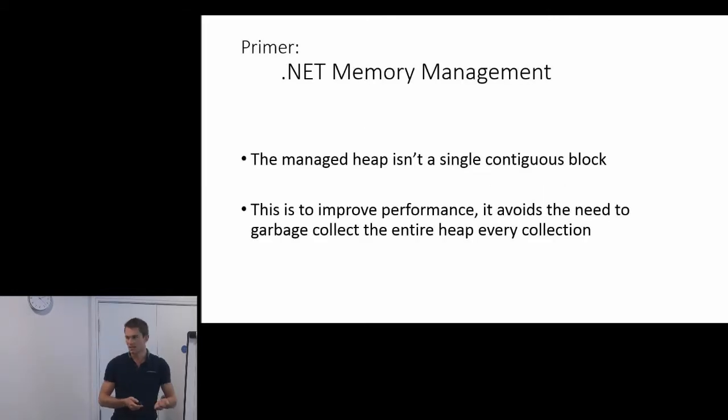So the important thing to know about memory and .NET is that the heap isn't actually a single place in memory. It is, in fact, divided into four separate chunks. And the reason for this is to improve performance, because it allows the CLR to garbage collect certain parts of it at a time, rather than having to do the entire thing every single collection.